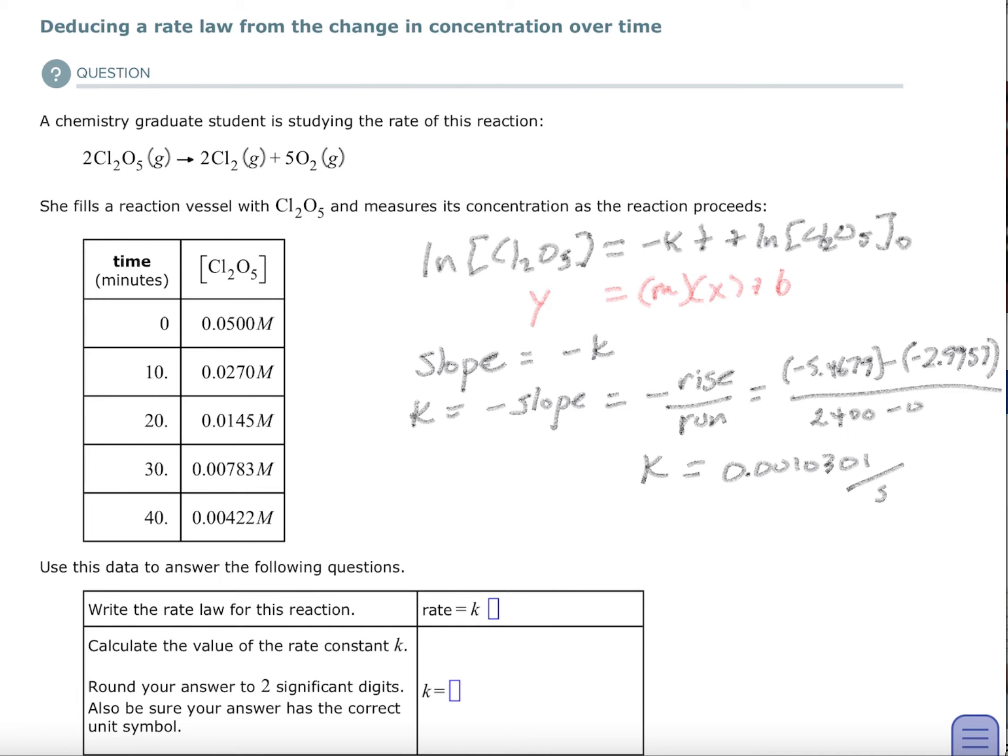So I know what the rate law is. It's simply going to be the rate law is going to be k times the concentration of Cl2O5. That would be what I would do as my answer for the first part. This is going to be k times the molar concentration of Cl2O5. So that's the first part.